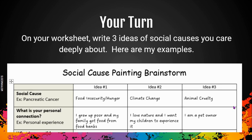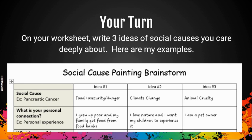Your turn — on your worksheet, write at least three ideas of social issues or causes you care deeply about. Here are my examples. You can't copy the example written on the paper — pancreatic cancer — that's my example. Nor should you really copy one of these examples unless you can justify your personal connection and why you care. Being social issues, they are things that could apply to large groups of people.